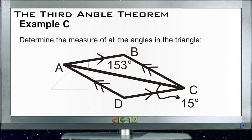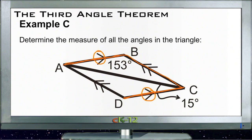Example C asks us to determine the measure of all angles in the triangle. The first important thing to note is that side AB is parallel to side CD, as indicated by the parallel lines notation. That also tells us BC is parallel to AD, shown by the double hash mark notation. Because of that, line AC is a transversal of two sets of parallel lines, which means alternate interior angles are going to be equal.